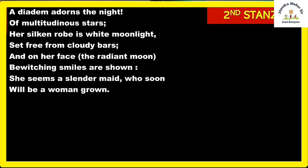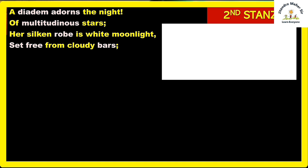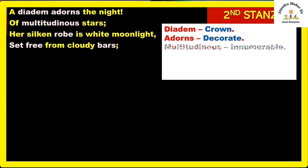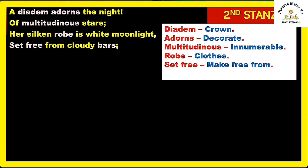Let's see the second stanza: 'A diadem adorns the night of multitudinous stars; her silken robe is white moonlight, set free from cloudy bars.' Diadem means a crown; adorns means to decorate; multitudinous means innumerable, which cannot be counted; robe means clothes; set free means to make free from; and bars here means patches, not rods.